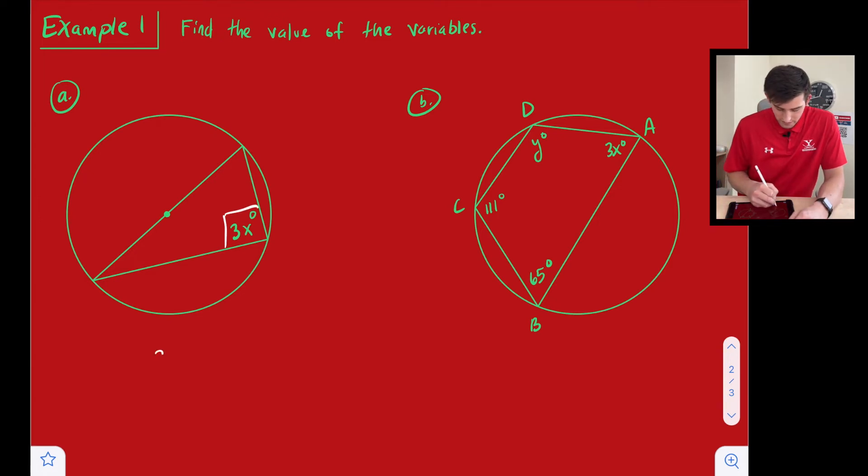So we could just set 3X equal to 90. We can divide both sides by three and we get X is equal to 30.